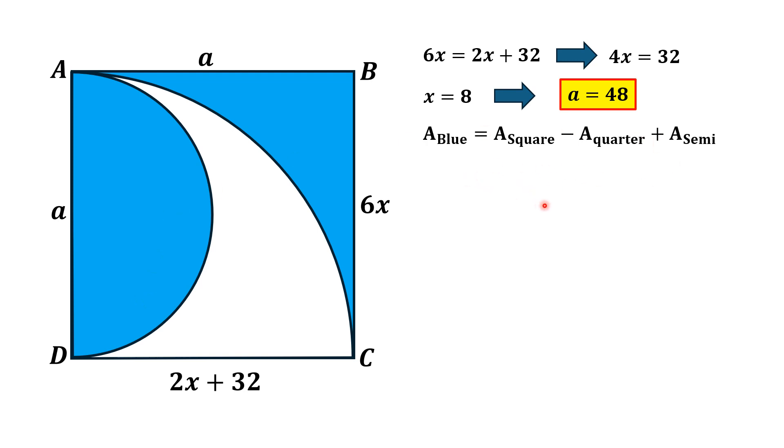Substituting these values, we know that area of square is equal to square of its side. Area of quarter circle is 1 over 4 pi r square and area of semicircle is equal to half times pi r square.